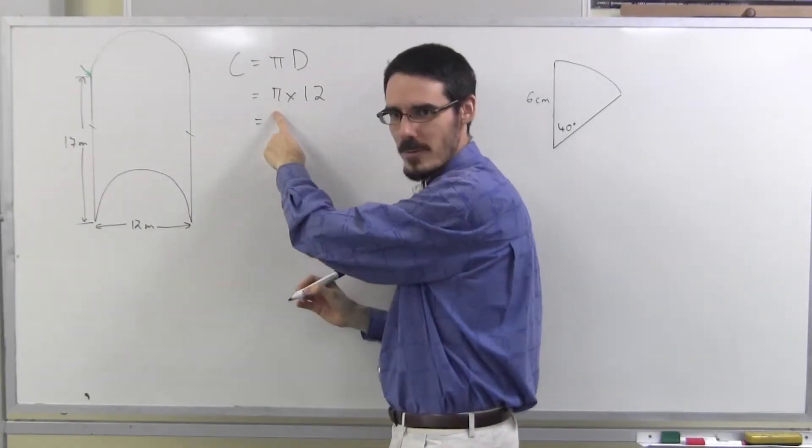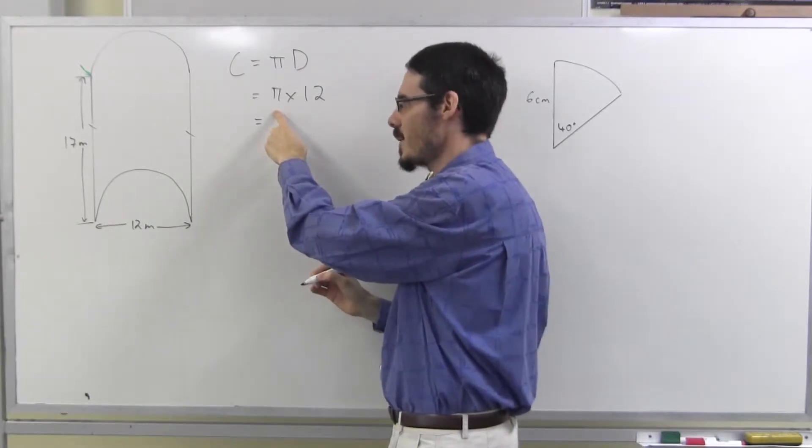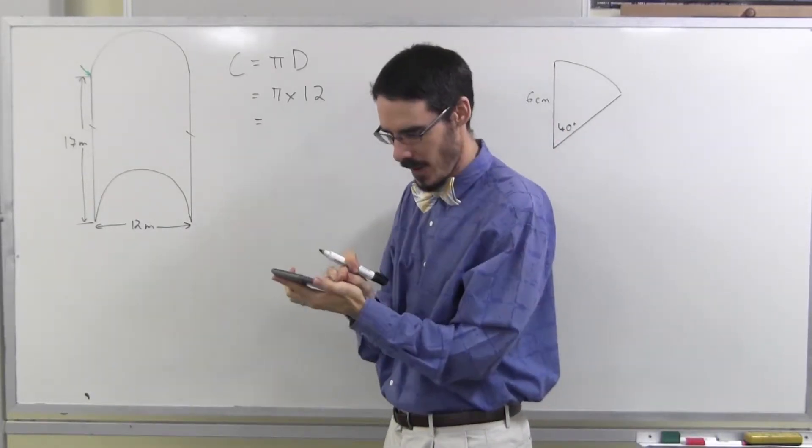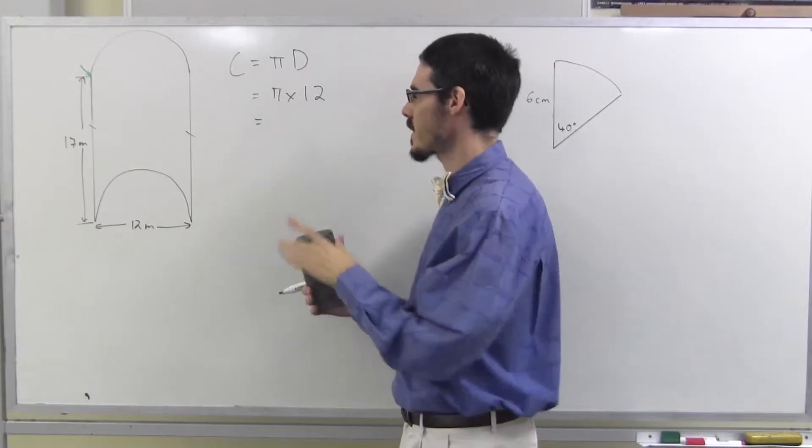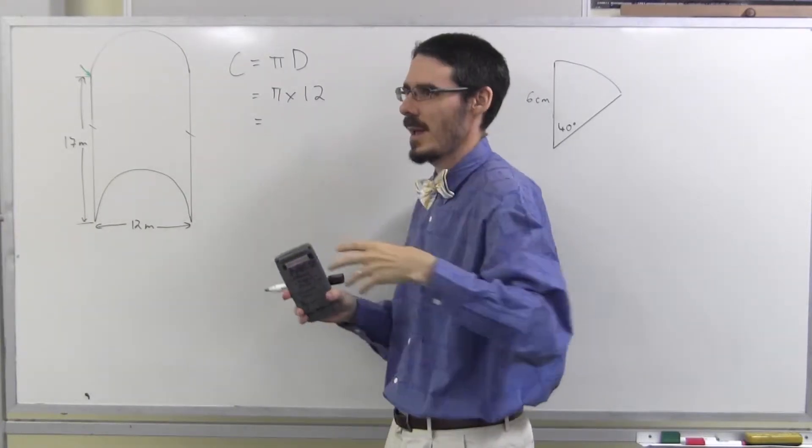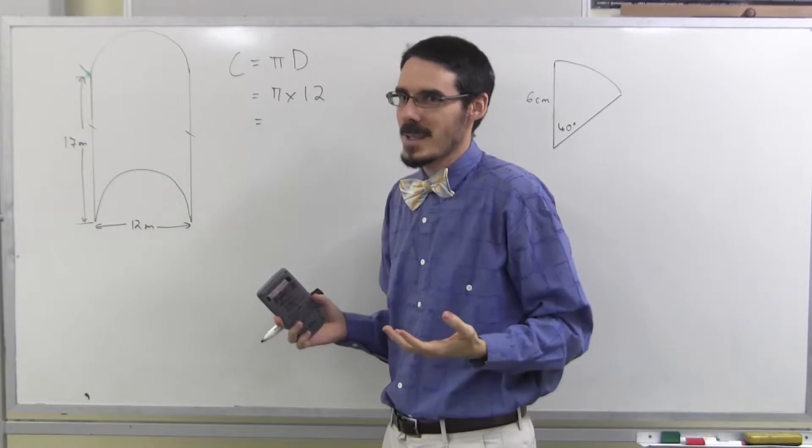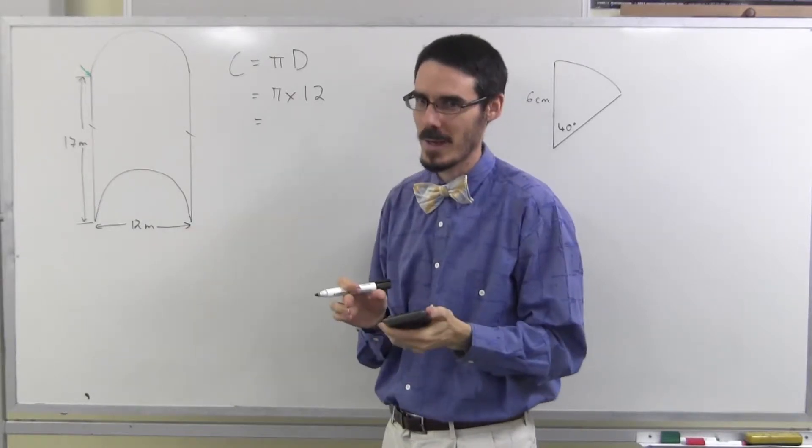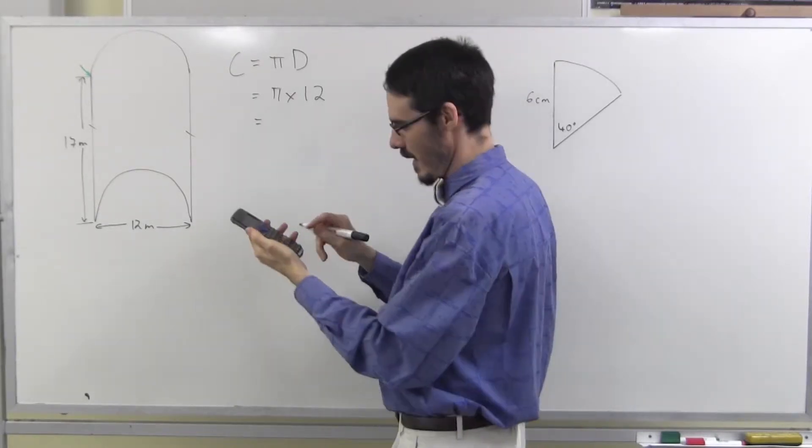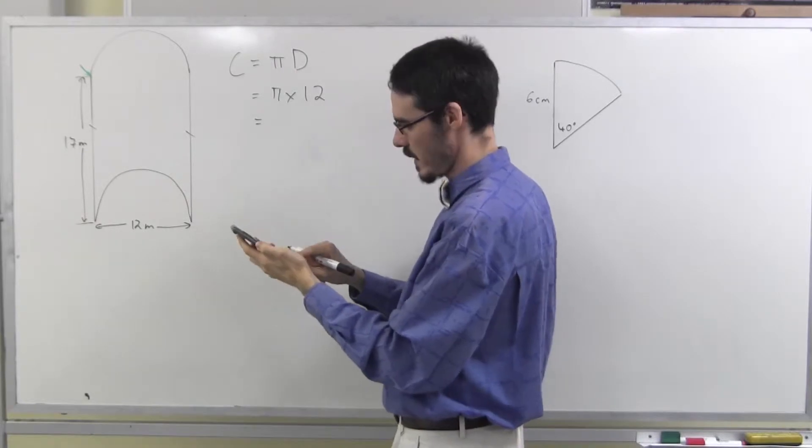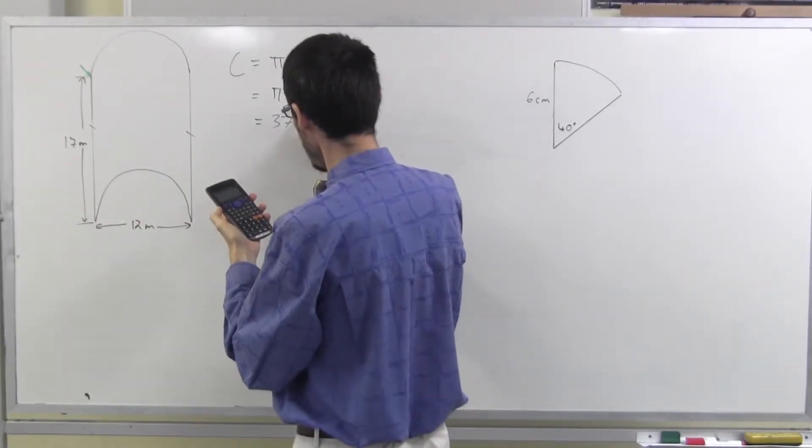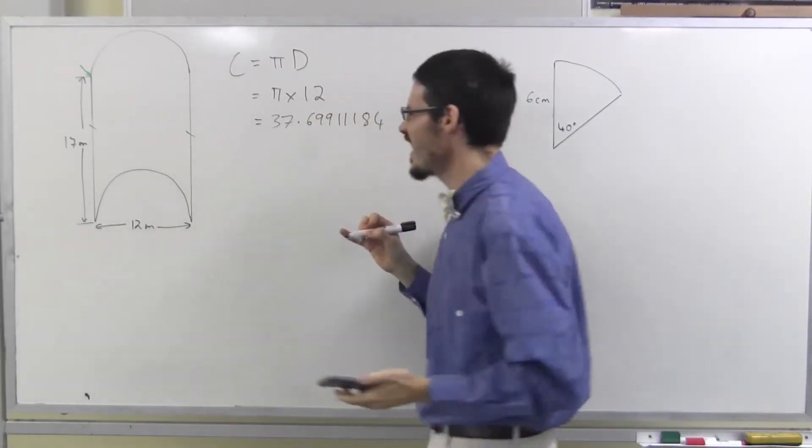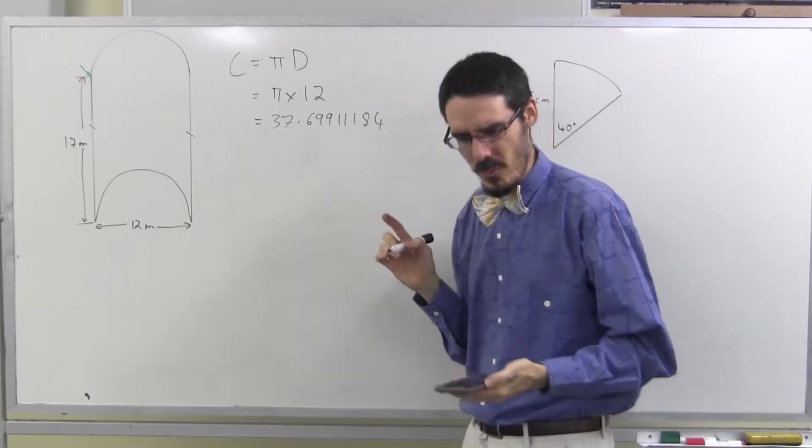I am not going to use 3.14, I am not going to try and work this out in my head, I'm going to get my calculator. Always, always use the pi button on your calculator. Because if you just use 3.14 and later on you're working out some complicated things that need some accuracy, you're not going to be accurate enough. Use your calculator, it knows pi better than you do probably. Pi times 12, 37.699111. Do I need all those digits though? Probably not.